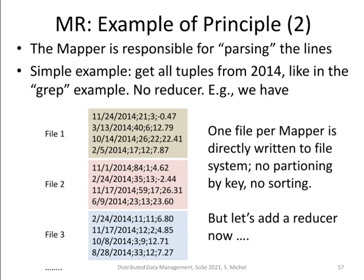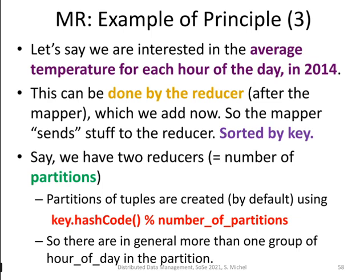This is like the grep example we have seen before, so we do not need a reducer — we only need the map phase. In the end, we have different files in the file system containing only the information from the year 2014. There is one file per mapper, no partitioning done by key, and no sorting — it's a very simple analysis.